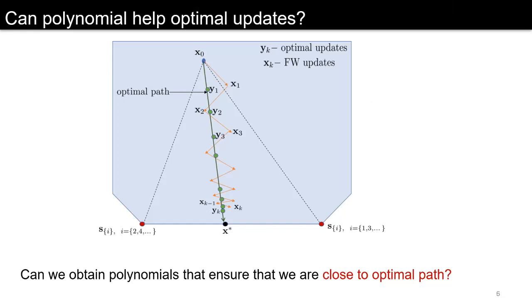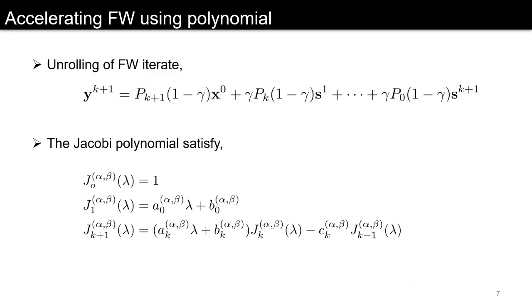Therefore, the main question is can the polynomial help in finding the optimal updates? For that, we unroll the Frank-Wolfe iterate and we get the (k+1)th iterate as a (k+1)th degree polynomial in (1-γ)x⁰ + γ times a kth degree polynomial in s¹ plus until γ times a 0th degree polynomial in s^(k+1).